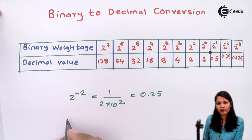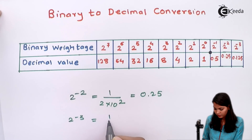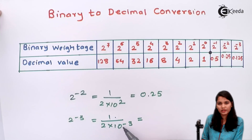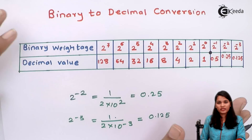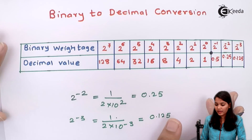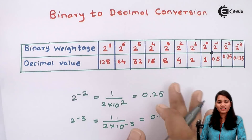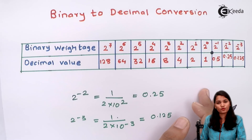Now, 2 raised to minus 3 means 1 divided by 2 cubed, which gives 0.125. This table is very important and it is going to help us to convert binary numbers into decimal numbers. Now let's see the step-by-step conversion of binary into decimal.